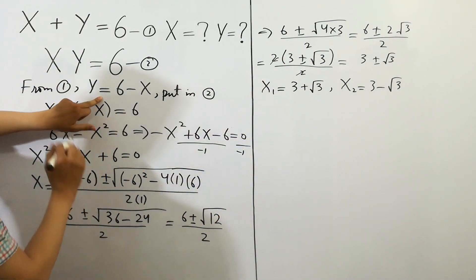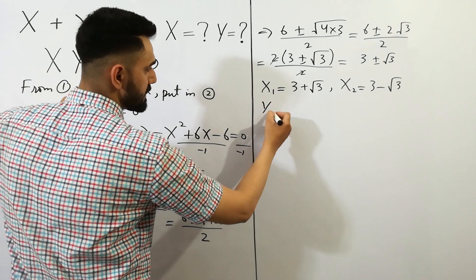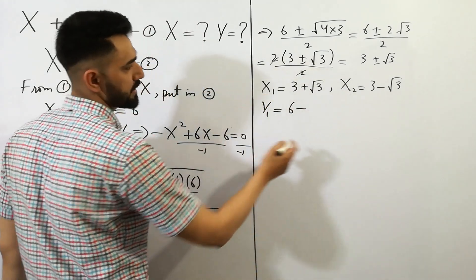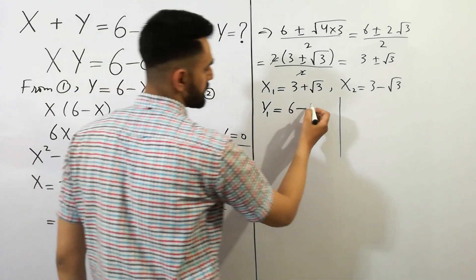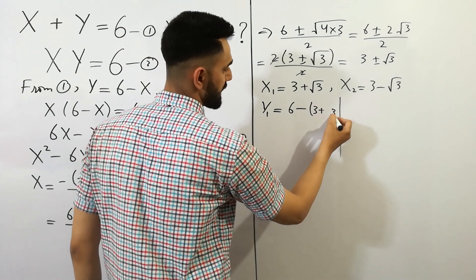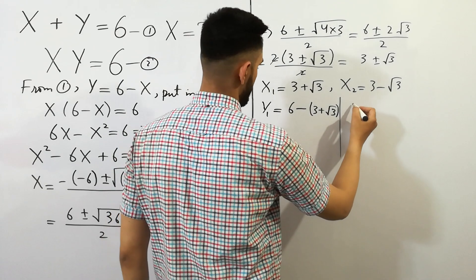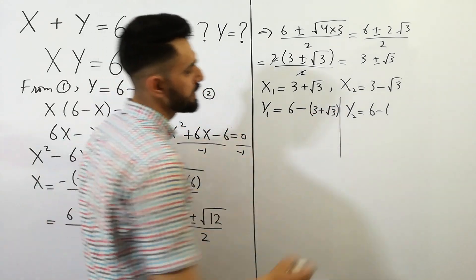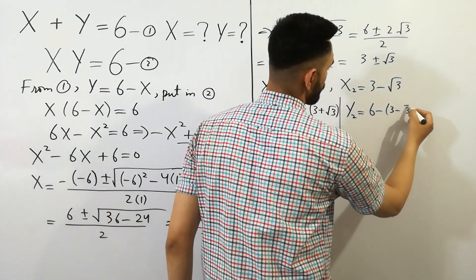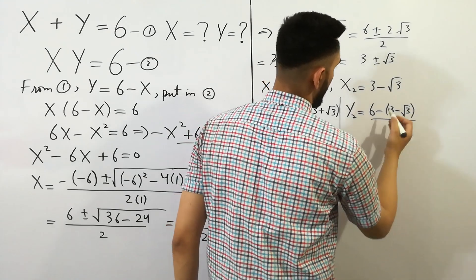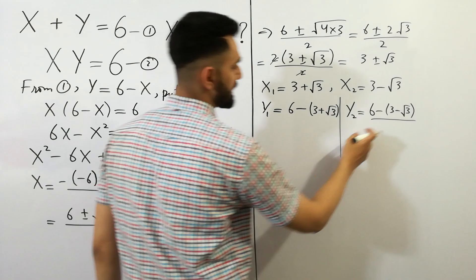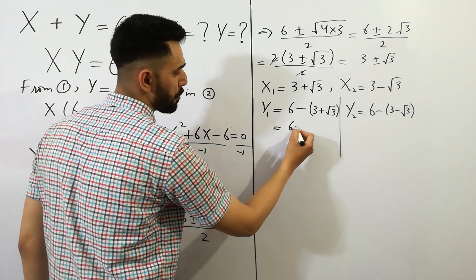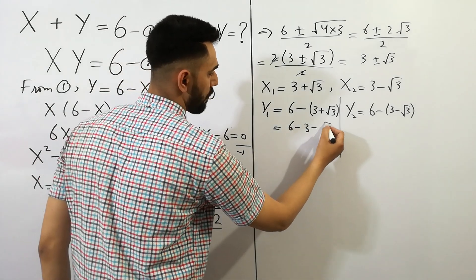Since y is equal to 6 minus x, we can write y1 is equal to 6 minus x1, where x1 is 3 plus square root of 3. Similarly, y2 is equal to 6 minus x2, where x2 is 3 minus square root of 3.